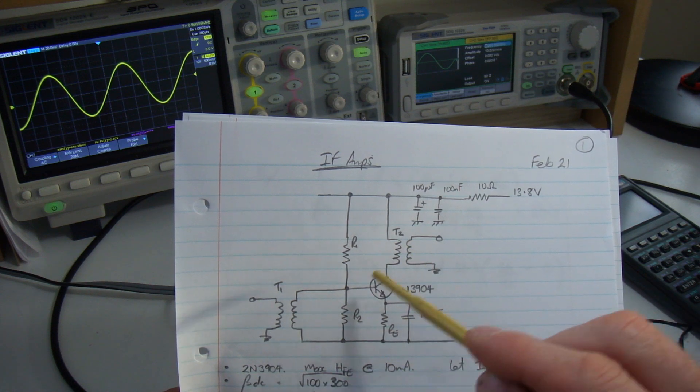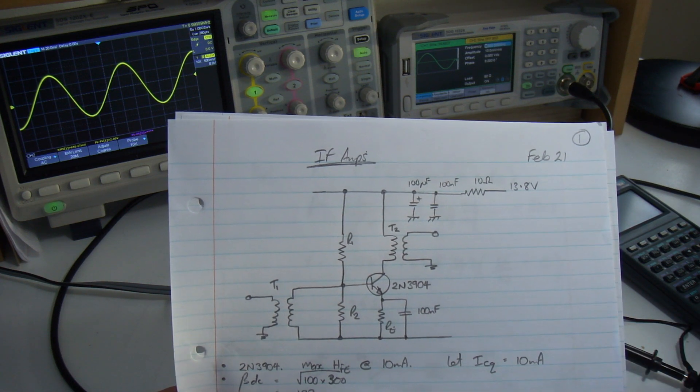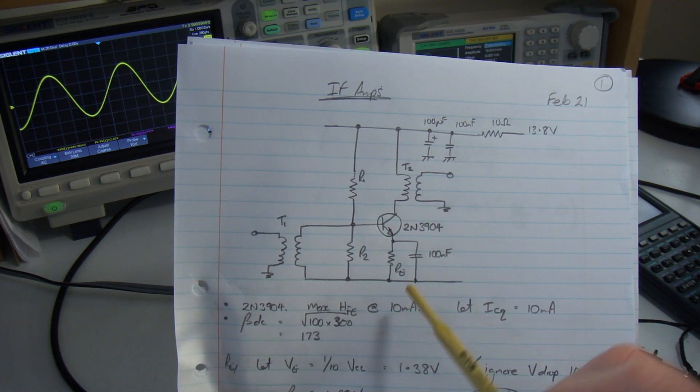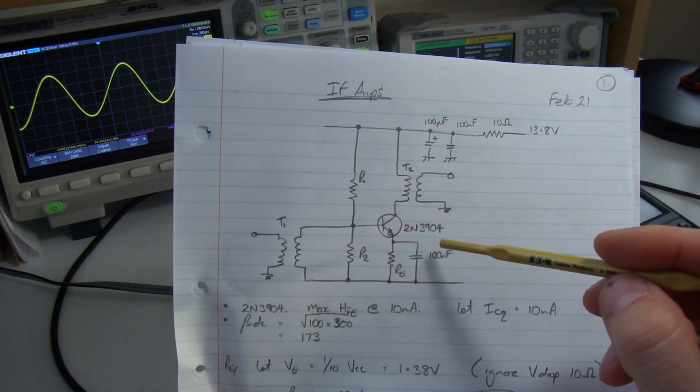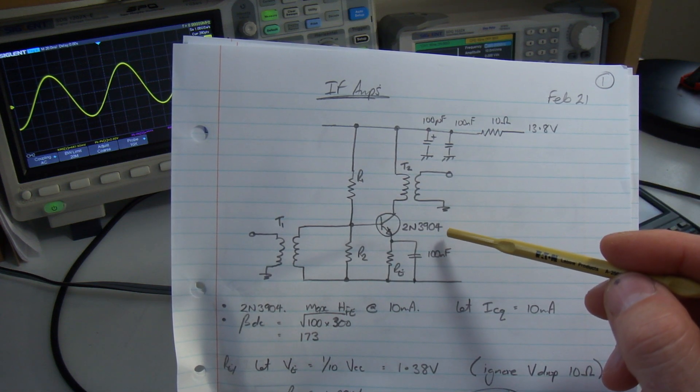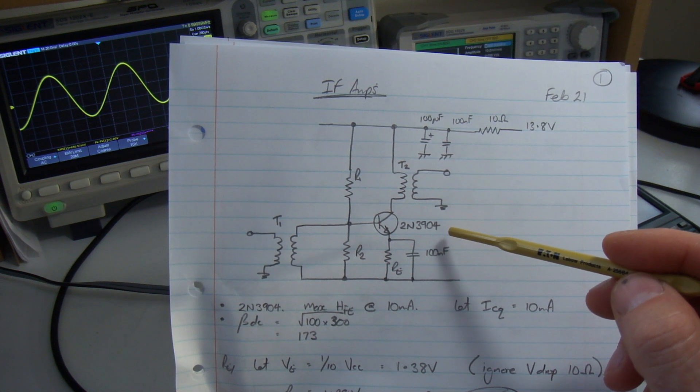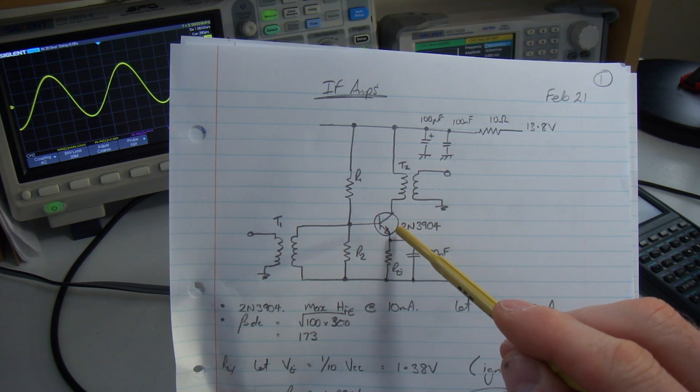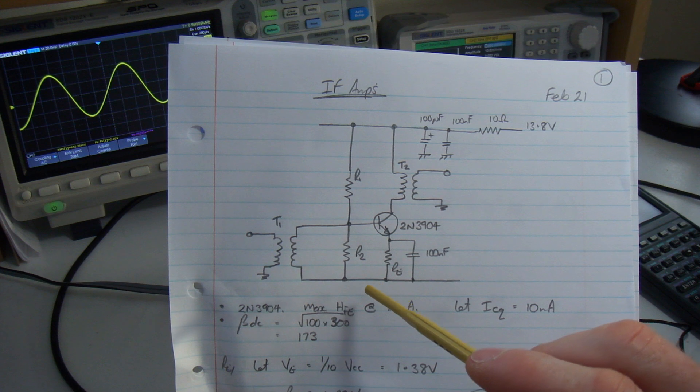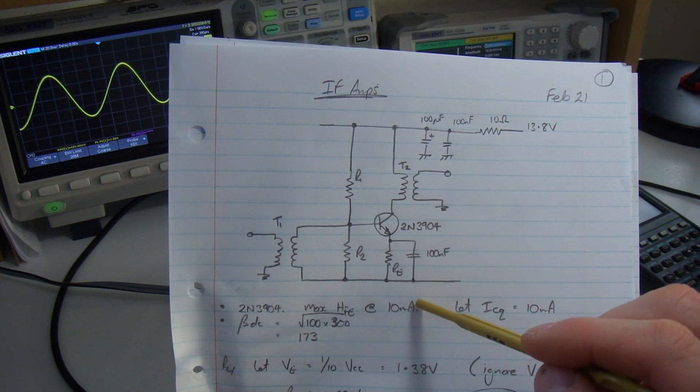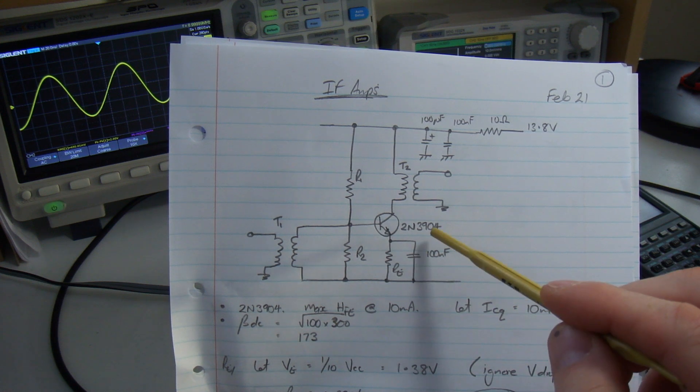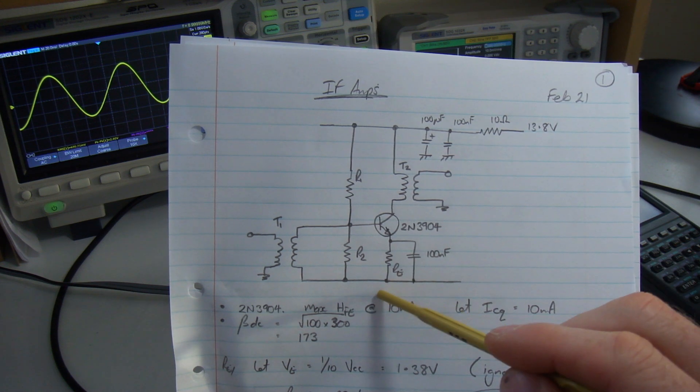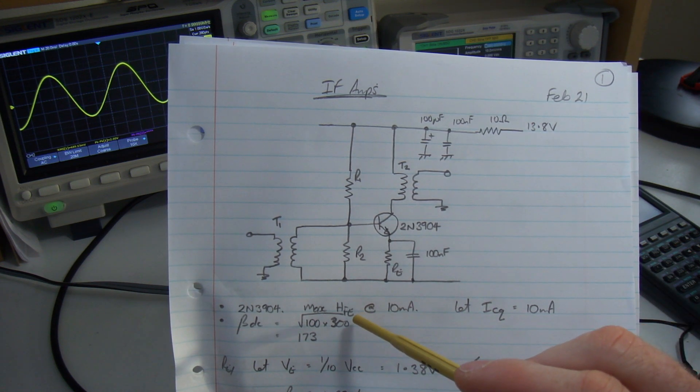What I decided to do is I've selected 10 milliamps as the quiescent current passing through this device, because if you look at the spec sheet for the 2N3904, the maximum HEFE, or the DC gain for this particular transistor occurs at 10 milliamps. Any higher above 10 milliamps, I have a drop in HEFE but also I get more noise. So it's a happy medium of noise versus maximum HEFE.